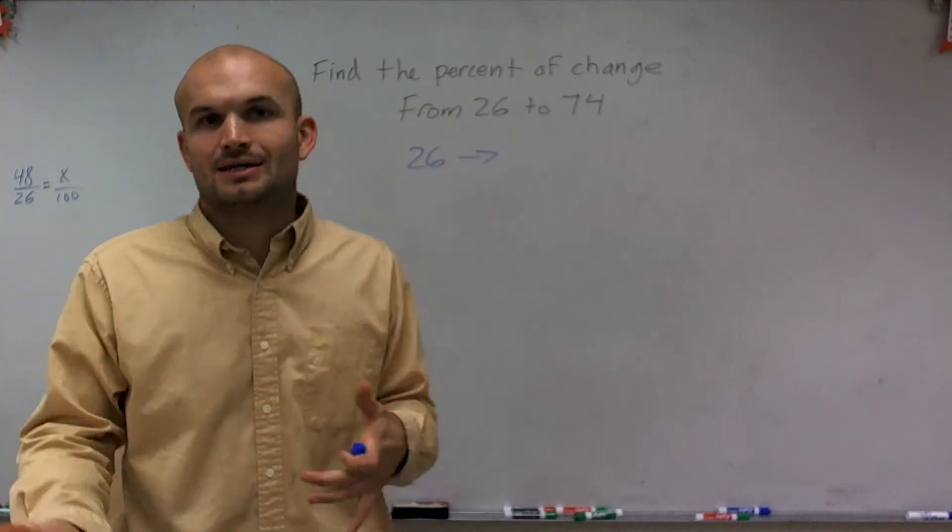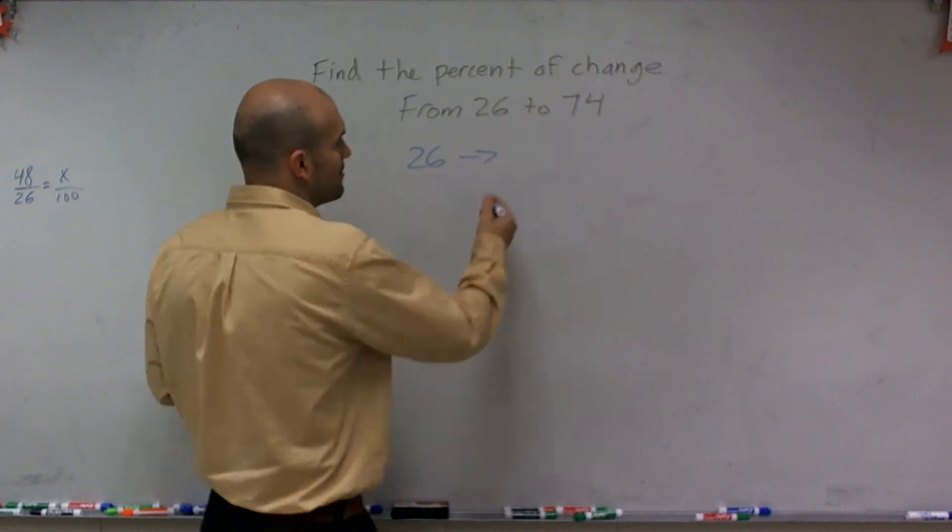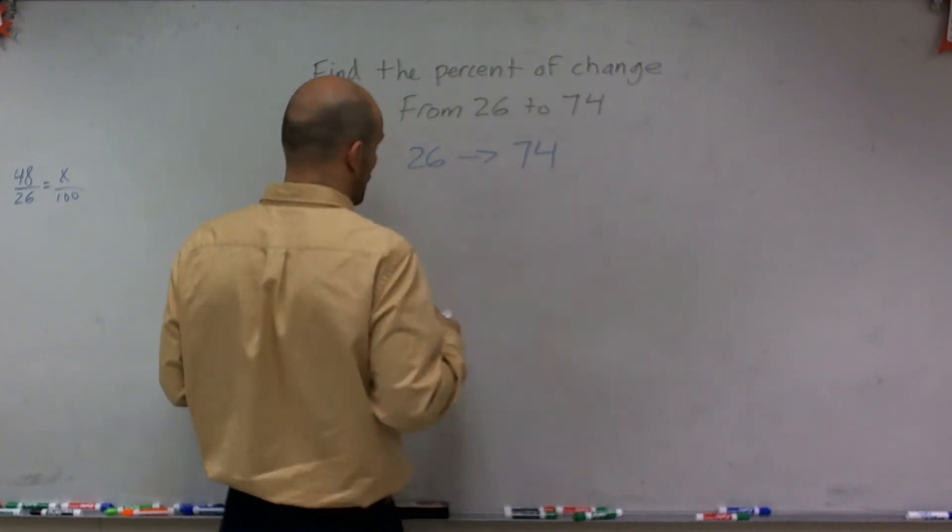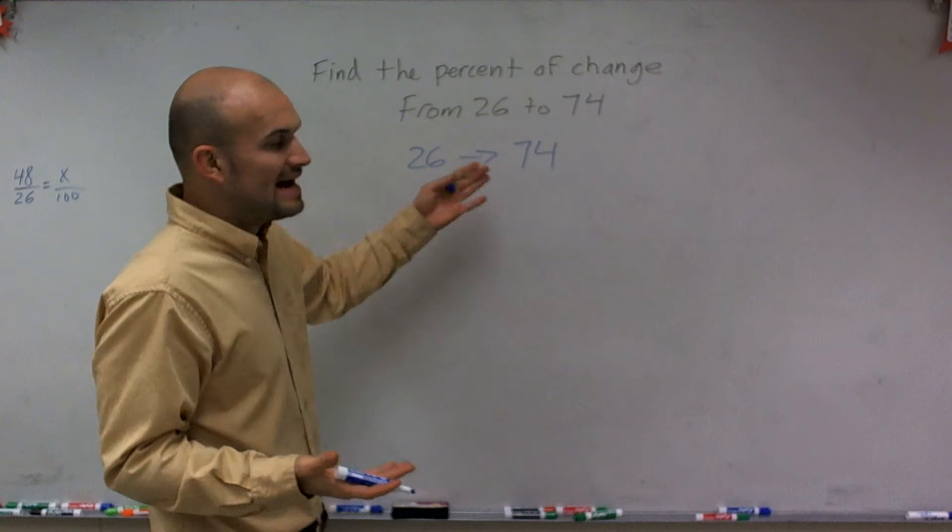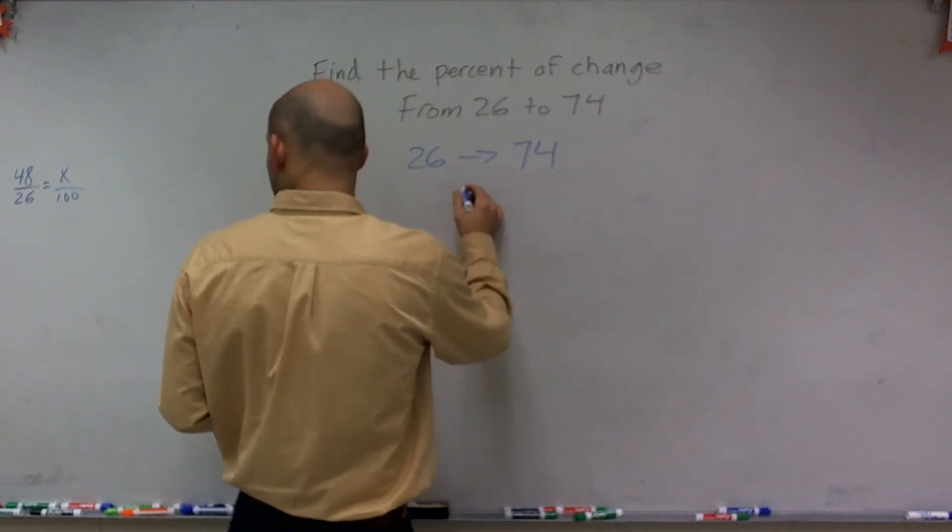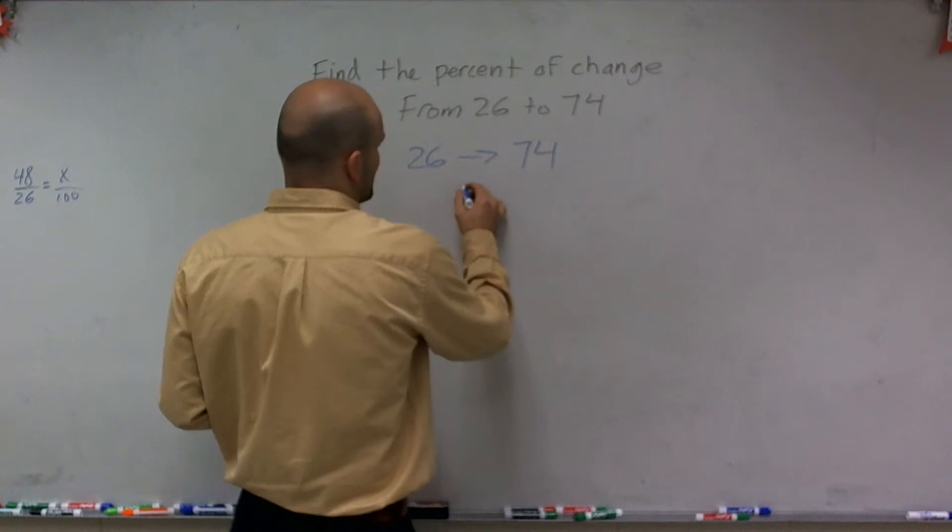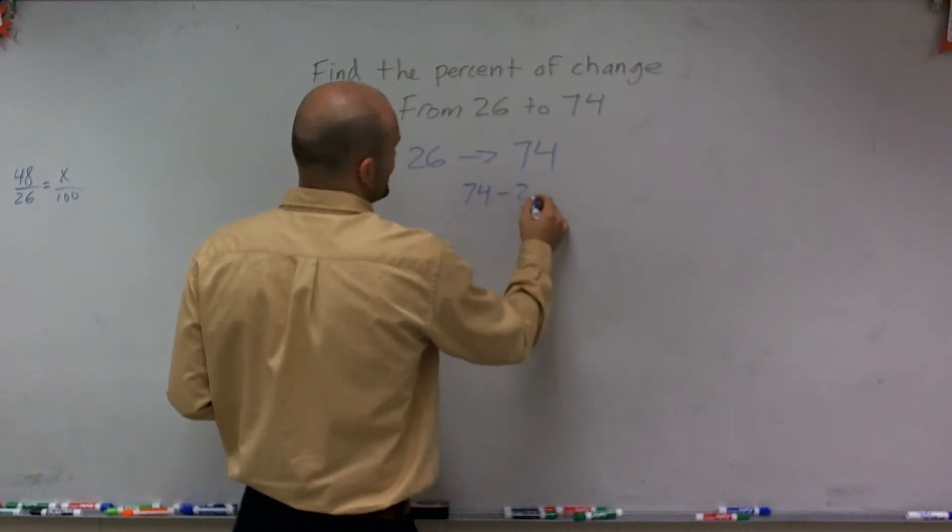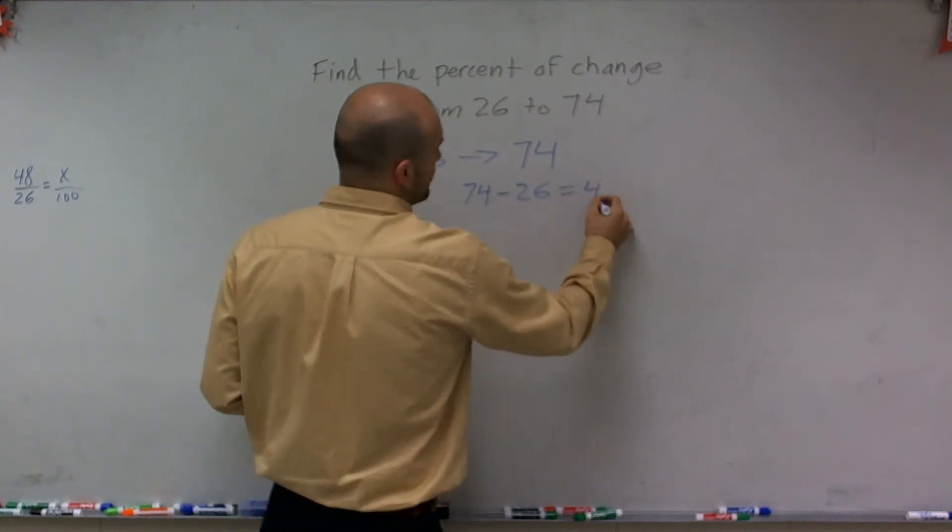So we're buying, collecting, whatever. What we want to do is see what is the change in value from there. To find the change, we can just go ahead and subtract. So by subtracting, I'm going to have 74 minus 26, which equals 48.